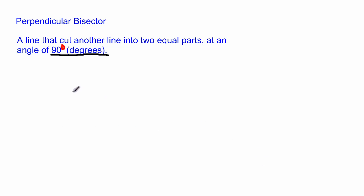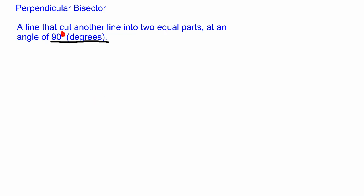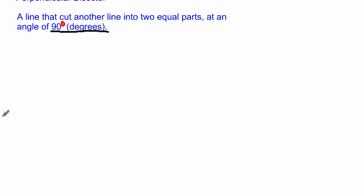So in this lesson we'll be focusing on how we construct a perpendicular bisector by using our ruler, pencil, and a pair of compass. Now let me just pull this down a bit because we're going to need a little bit more space.